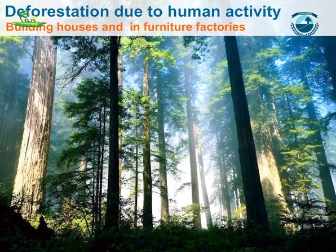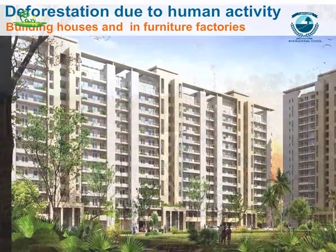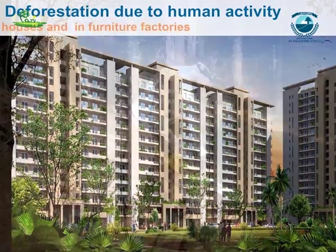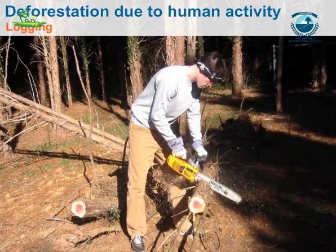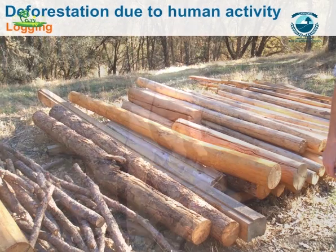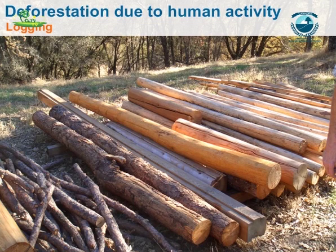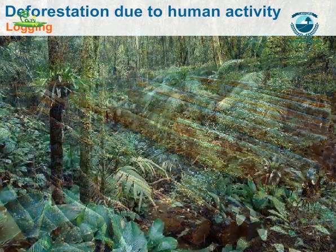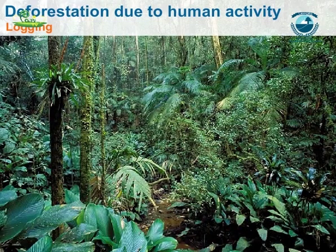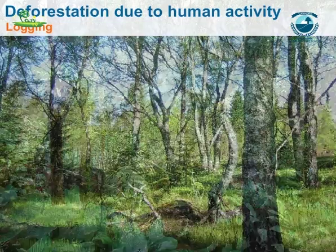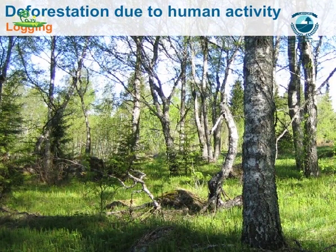Building houses and furniture: Trees are cut to build houses and make furniture. Logging is cutting down trees in a forest to harvest timber for wood or fuel. The forest canopy is important to the forest's ecosystem because it houses and protects plant, animal and insect populations. It also protects the forest floor, which slows down soil erosion.